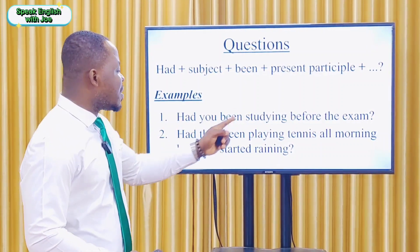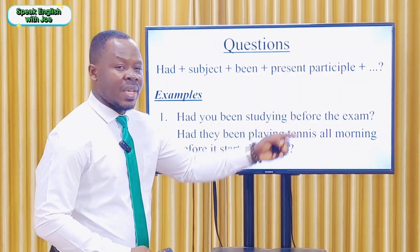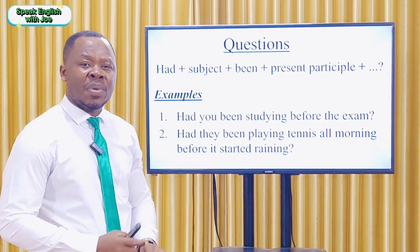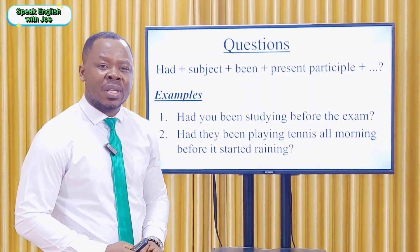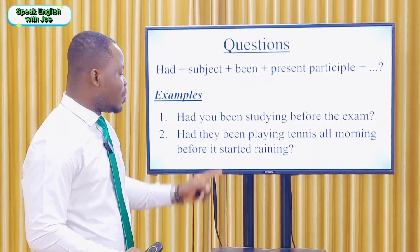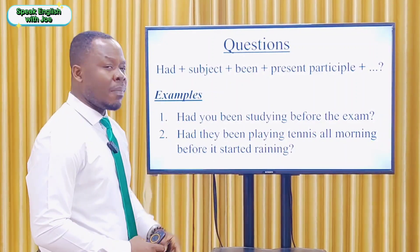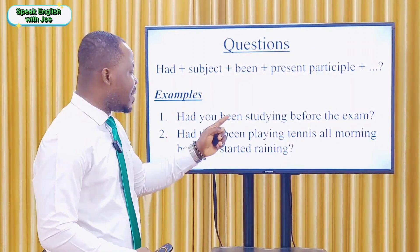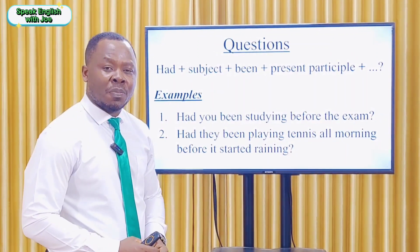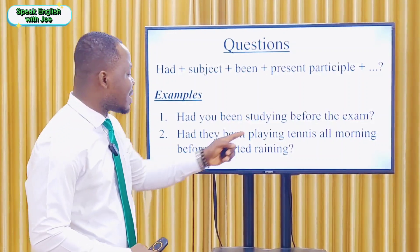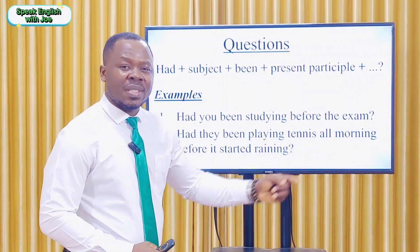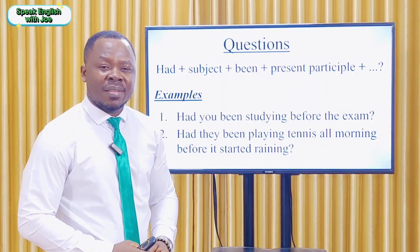Example one: 'Had you been studying before the exam?' In this question, we begin with the first helping verb 'had', plus the subject 'you', plus the second helping verb 'been', plus the present participle (main verb plus -ing) 'studying', plus the rest of the sentence, then the question mark.